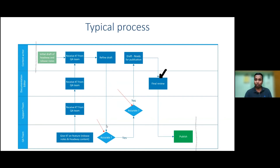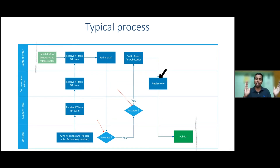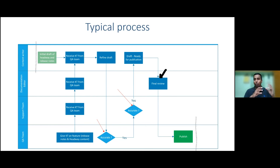Looking at the process diagram, you want to measure how much time gets stuck at each approval step and from one approval to the next. Timestamping everything helps you understand this. Also track the total time from start to publication. It varies for major articles, but you need the data to identify repeating trends and determine optimal timelines.